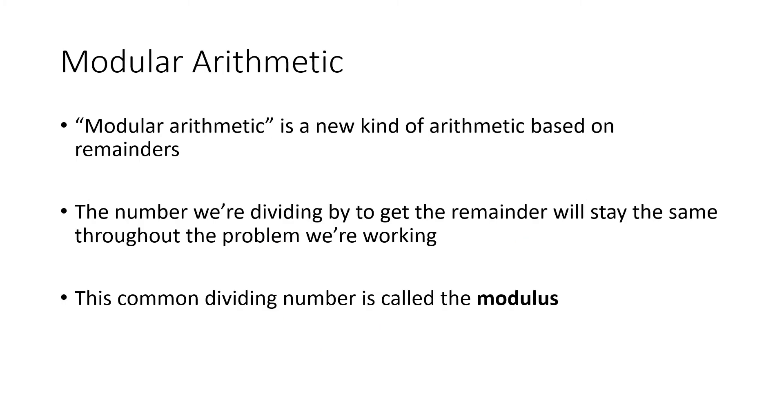So what we're doing is something called modular arithmetic. It's a new kind of arithmetic that's based on remainders. The number that we're dividing by to get the remainder, that's not going to change in the context of a given problem. So if we're talking about days of the week, this number, which we call the modulus, that number is going to be seven for days of the week. If we're talking about months of the year, the modulus is going to be 12.